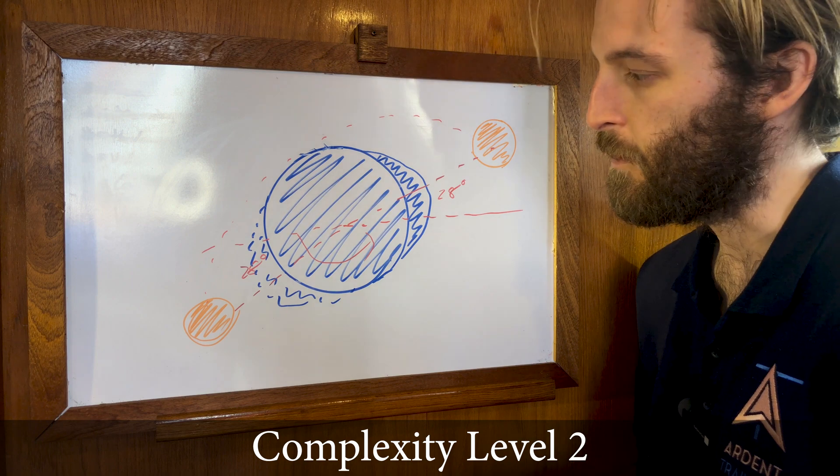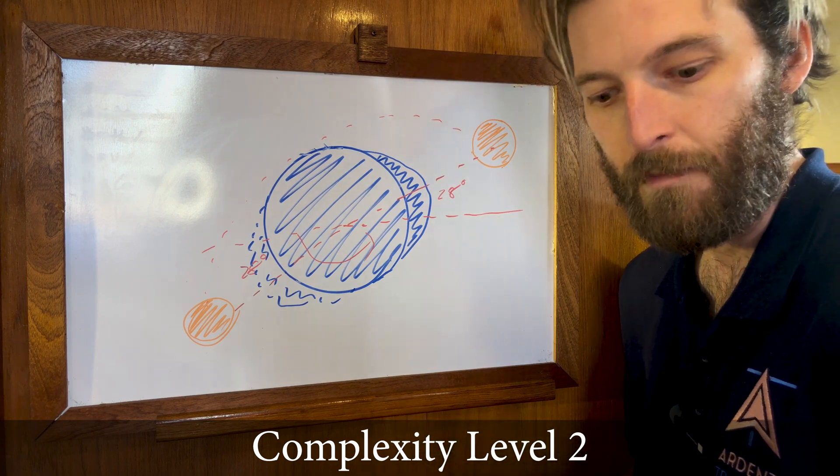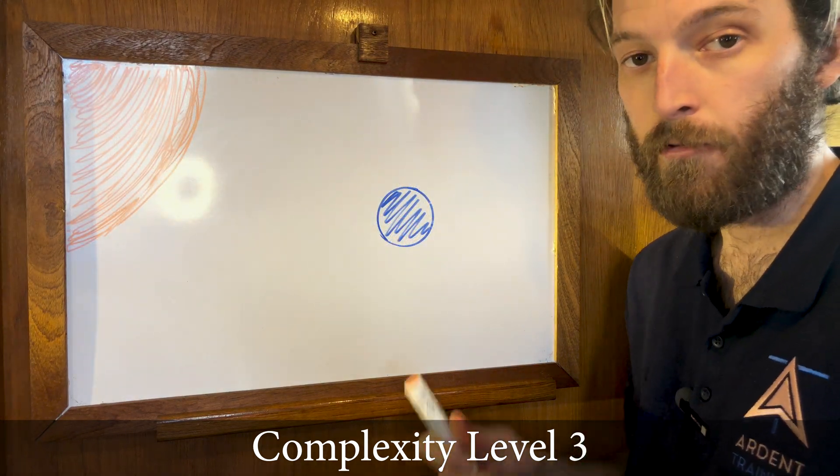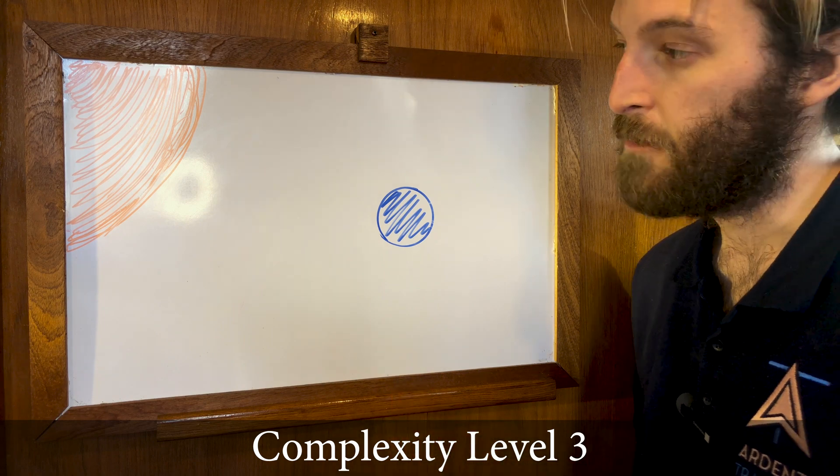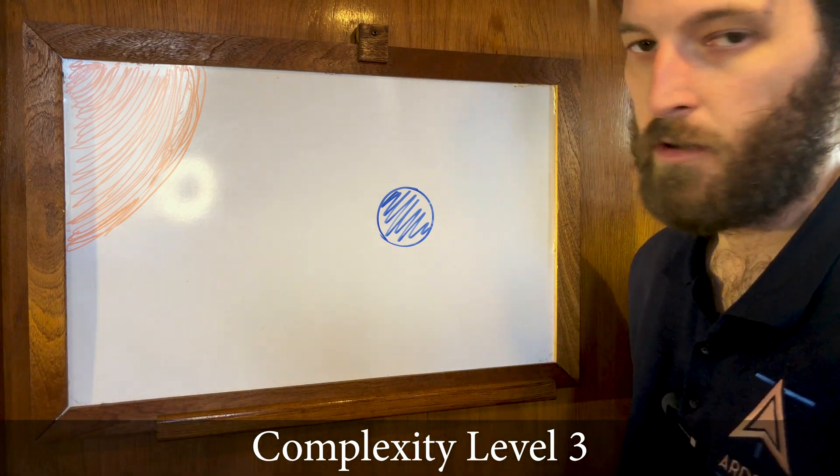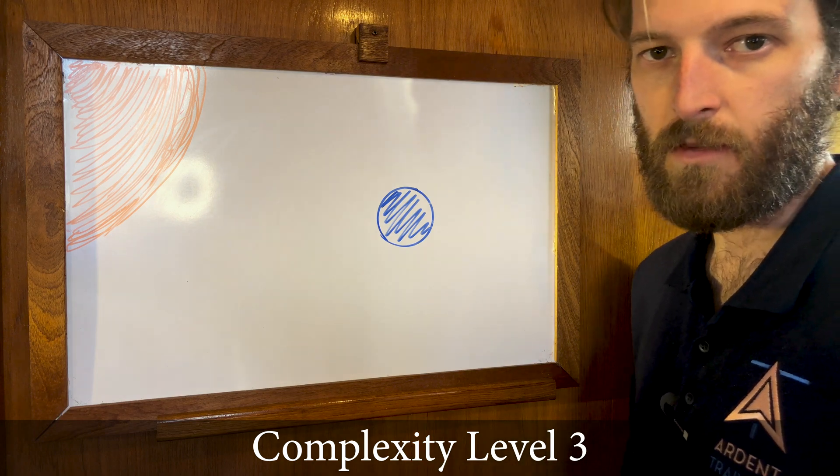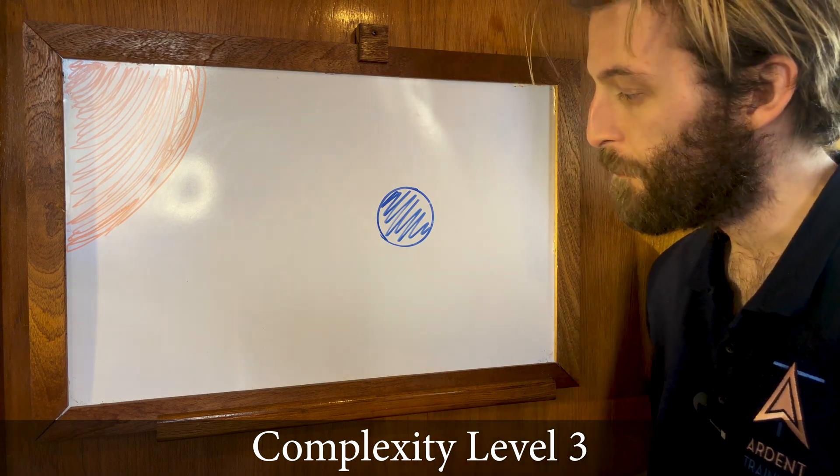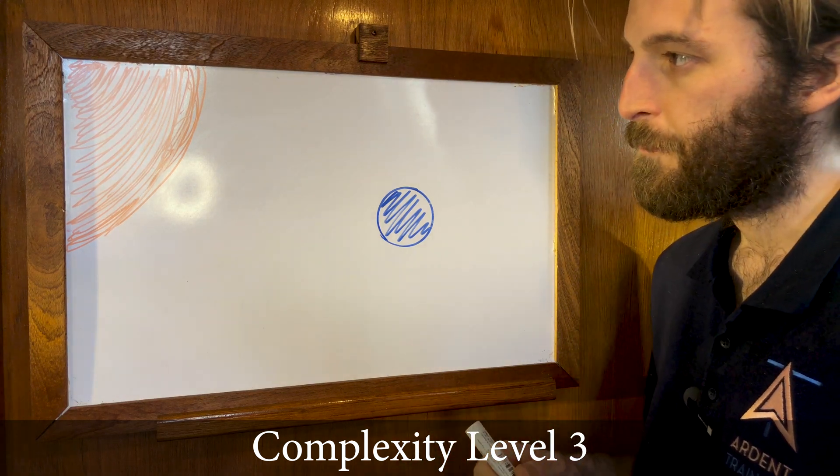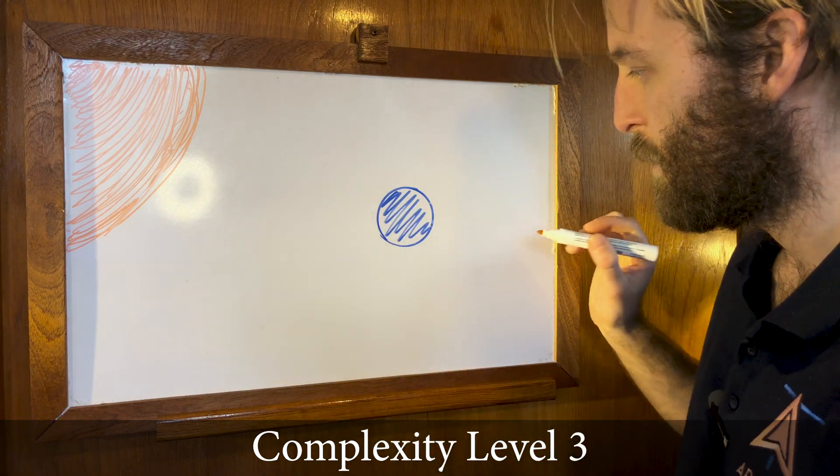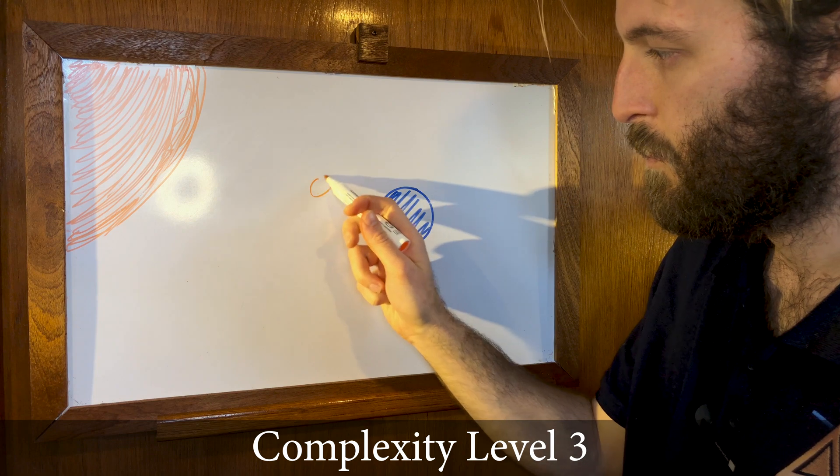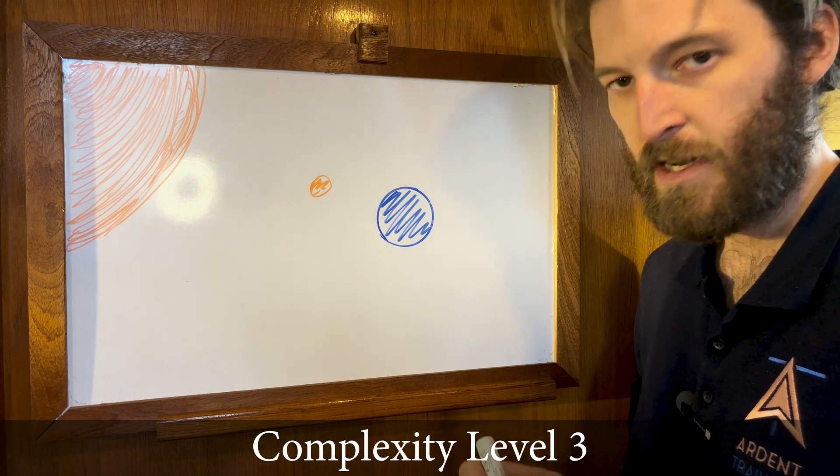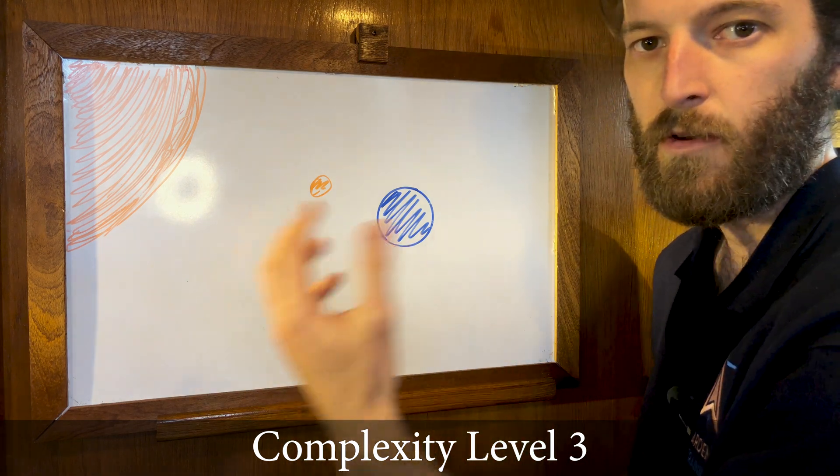Starting to get a little bit complicated already, certainly looks like a messy diagram. Anyway, moving on. Complexity level three, now we're going to introduce the sun. Now of course the sun is an enormous celestial body which also has a massive gravitational effect on the Earth. However, despite it being so big and the moon so relatively small, this is the moon, this is the sun, it's actually got much less effect because it is so far away.